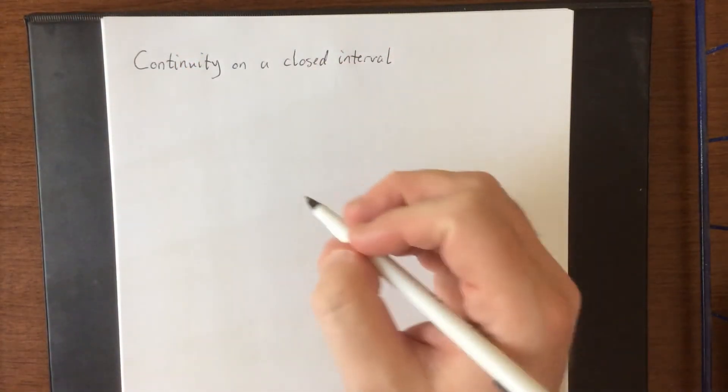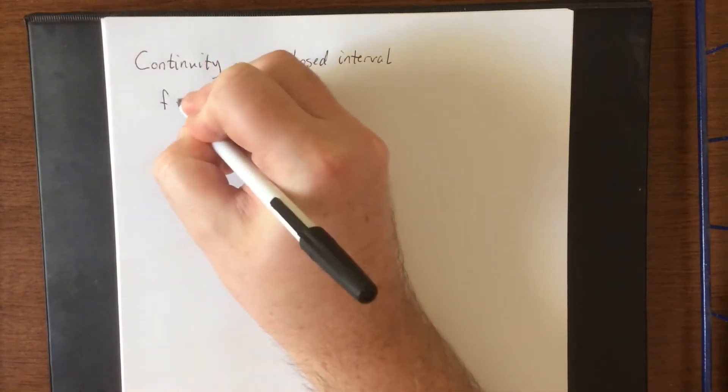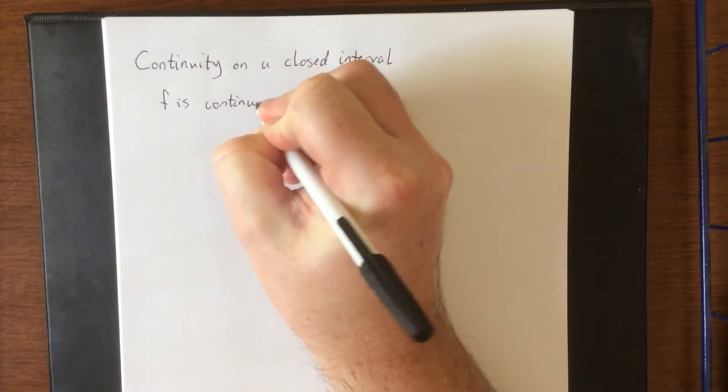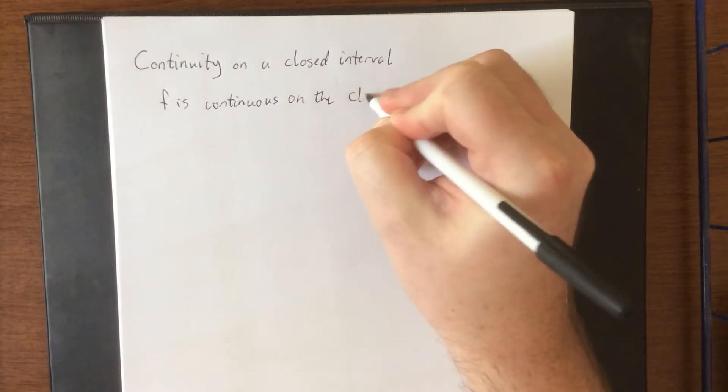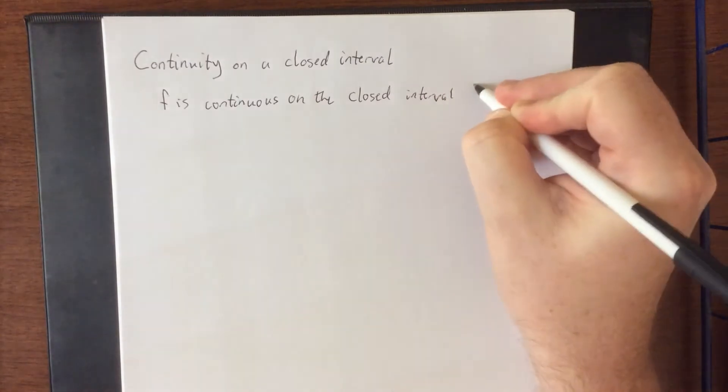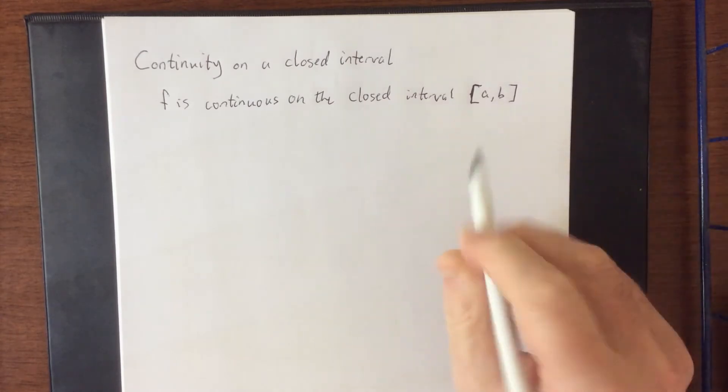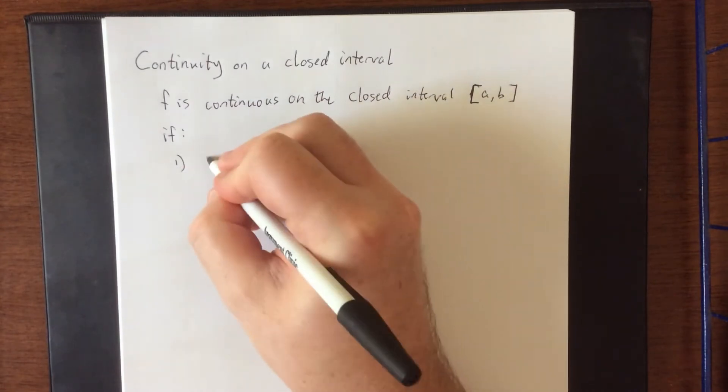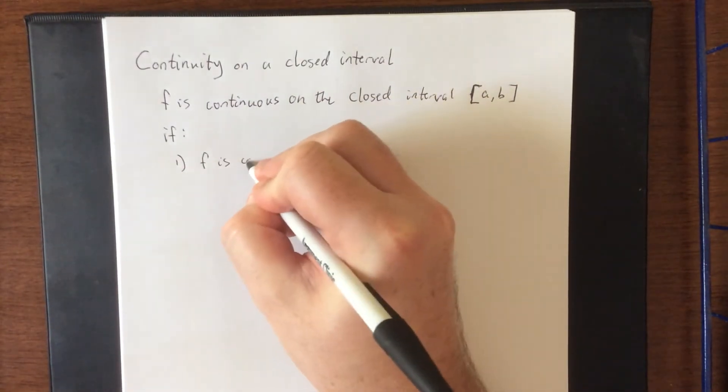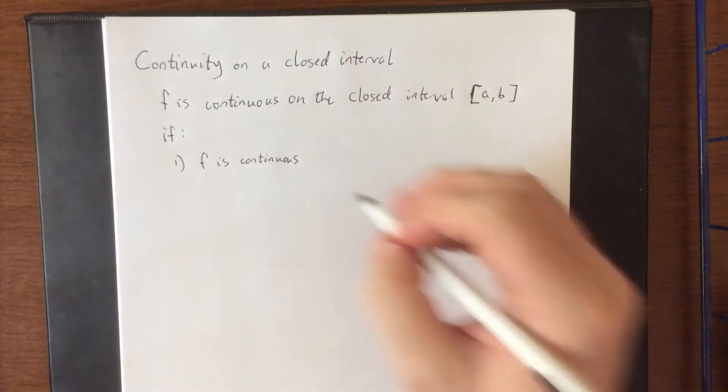So we will introduce this concept in the following fashion. F is continuous on the closed interval, and we'll use interval notation for this closed interval from a to b if three criteria have to be true. F is continuous on the associated open interval (a,b).